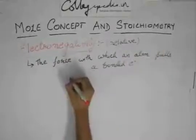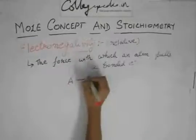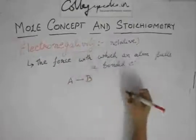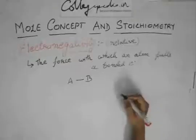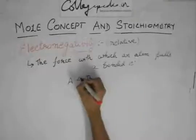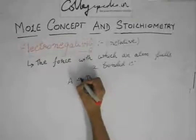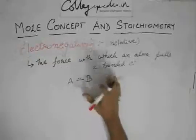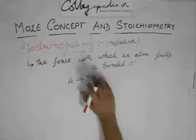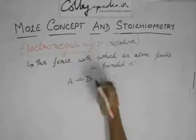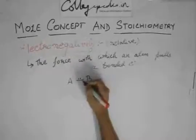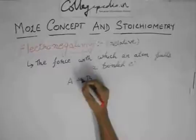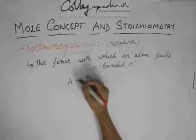Like suppose you have a compound AB and this is the bond between A and B. Now this pair of electrons between A and B which are shared, I am not talking about ionic compounds, I am talking about covalent compounds. This shared pair of electrons, they will not very quietly sit in the middle.